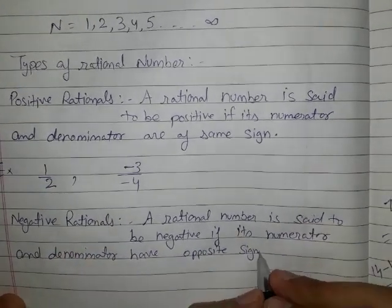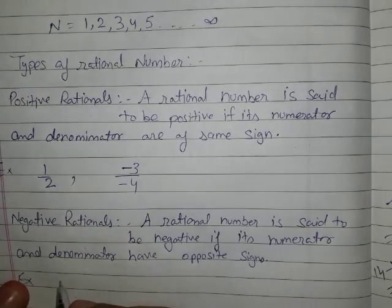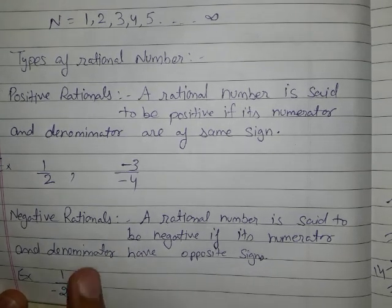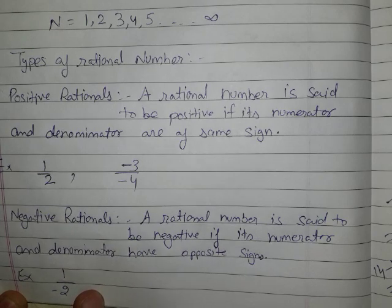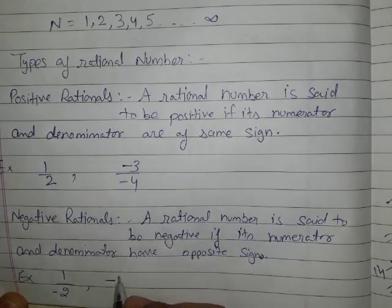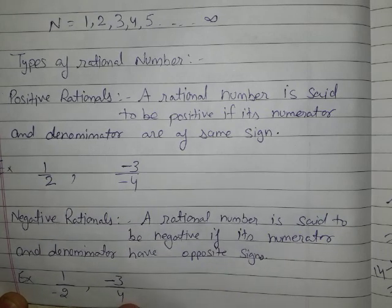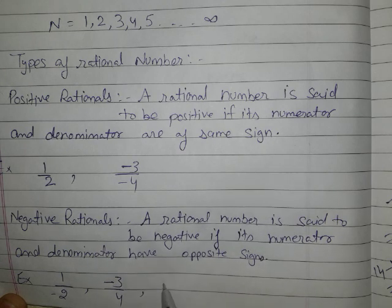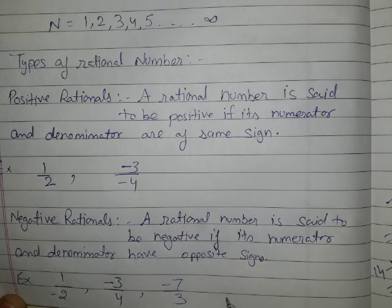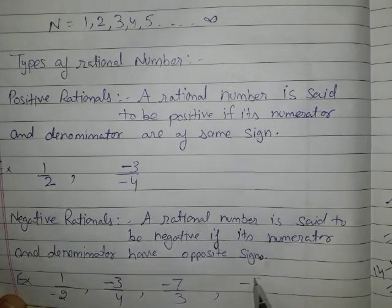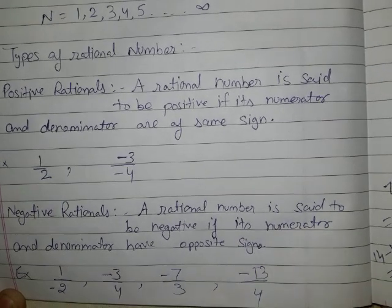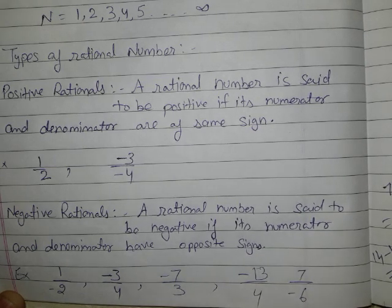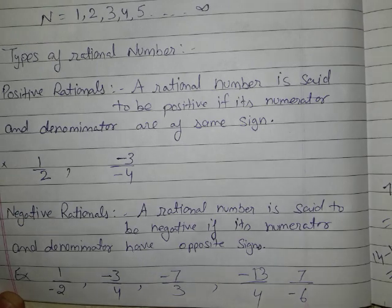Now, if I write 1 upon minus 2, it is a type of negative rational number because the numerator is a positive integer and the denominator is a negative integer. If I write minus 3 upon 4, again it is an example of a negative rational number. Further examples include minus 7 upon 3, minus 13 upon 4, and 7 upon minus 6 — all are negative rational numbers.